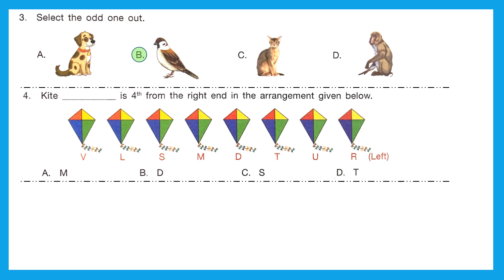Question 4: kite dash is 4th from the right end in the arrangement given below. We have to find the kite which is 4th in position from the right end. The left end is already given, so the opposite end is the right end. Counting from the right: V is 1st, L is 2nd, S is 3rd, and M is 4th. Option A, M, is the right answer because kite M is 4th from the right end.